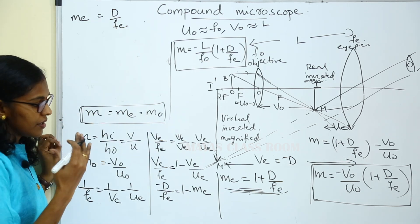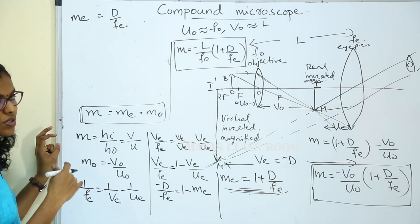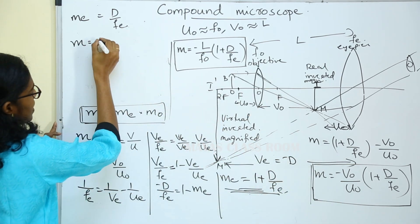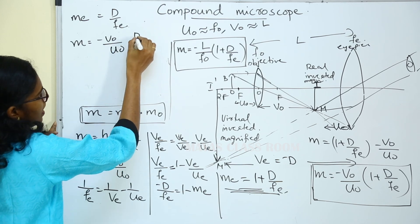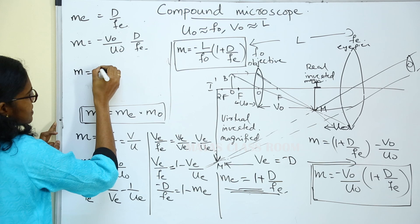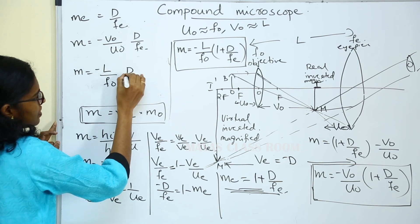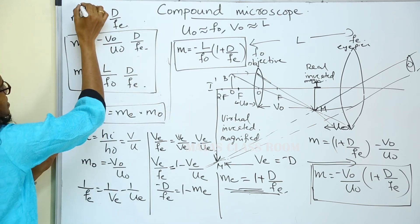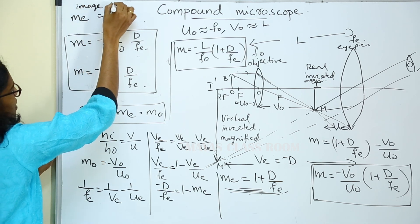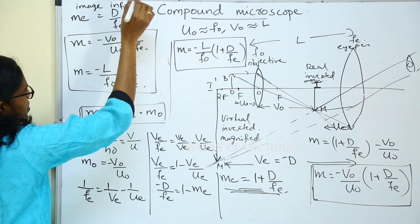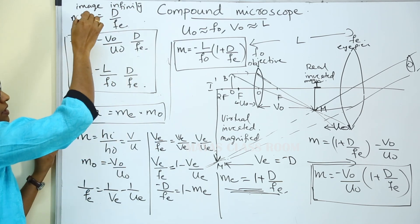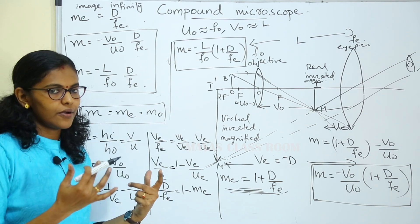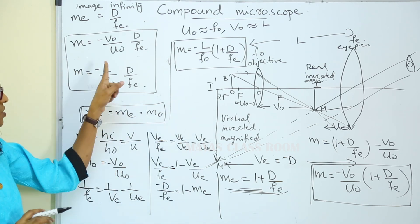In the case where the final image is formed at infinity, the total magnification of the compound microscope is M equals minus VO divided by UO into D divided by FE. When image is produced at infinity, the magnification of the eyepiece becomes ME equals D divided by FE.